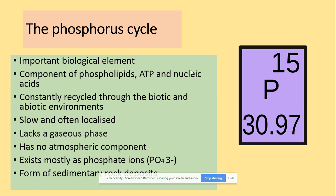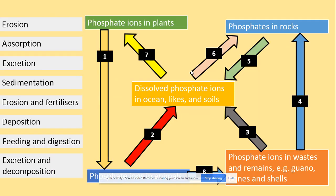Phosphate is a really important biological element because it's a component of phospholipids, ATP, and nucleic acids. It can be constantly recycled through the biotic and abiotic environments, and the cycle is slow and often localized. Comparing with nitrogen, phosphate lacks a gas phase and has no atmospheric compound.